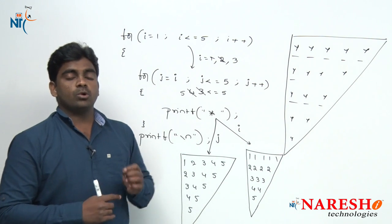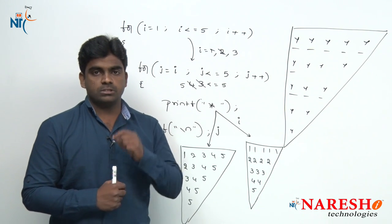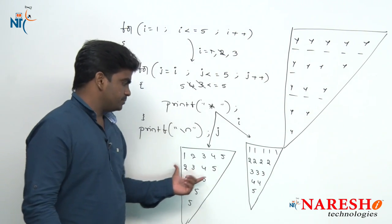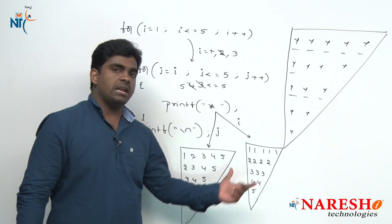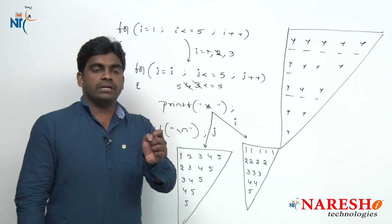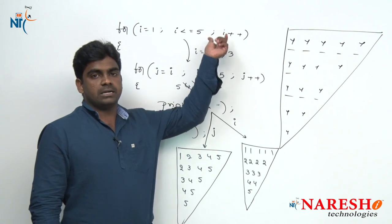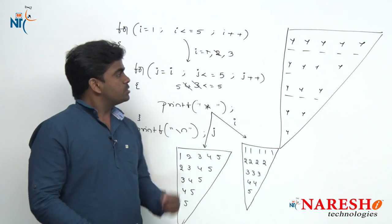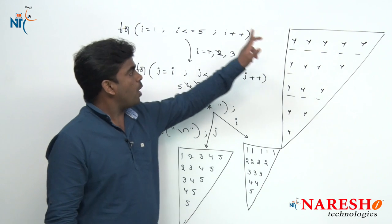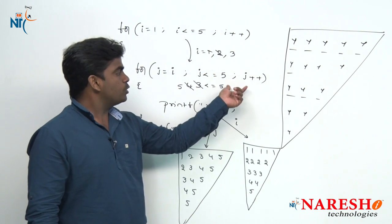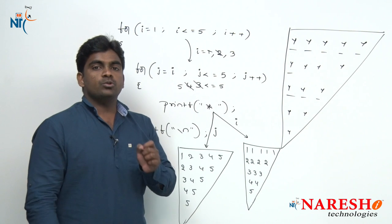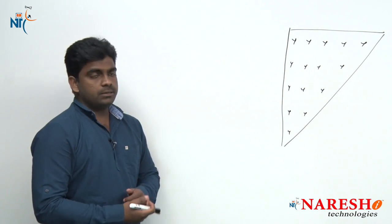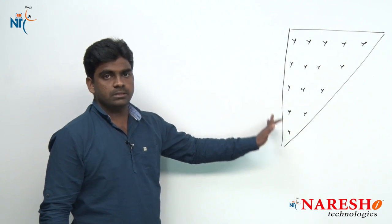In the interview they will not only ask printing stars — in the process of printing any patterns they may ask you to print some values like this. Such types of patterns are also very important. No need to worry — if you are perfect in how to print patterns using increment and decrement operators it is very easy. Now we will see the same pattern but in the outer loop using i-- and in the inner loop also using j--.